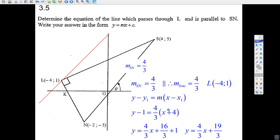And there's our answer. Let me just clean it up a bit. 4 thirds times x is 4 thirds x, 4 times 4 is 16 over 3, we add 1 to 16 over 3 and it equals 19 over 3. 3 over 3 plus 16 over 3 is 19 over 3.